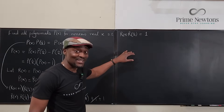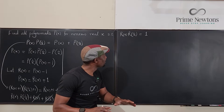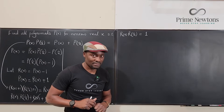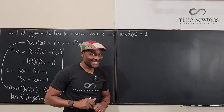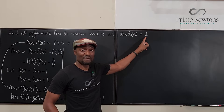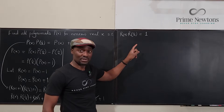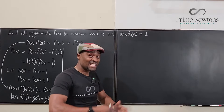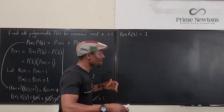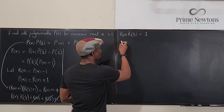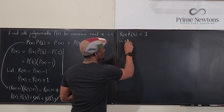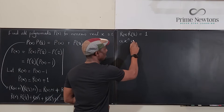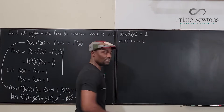Now this is the key to solving the problem, because the product of any two polynomials can never be a constant — and it won't even be a monomial unless both factors are monomials. Remember, this is true for all x's. The general form of a polynomial is a₁x^n + a₂x^(n-1) + ... all the way down.